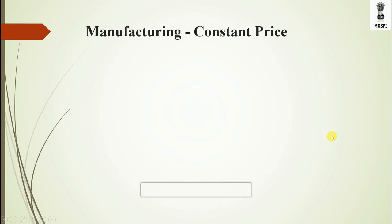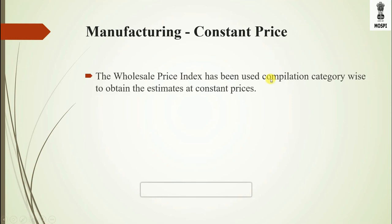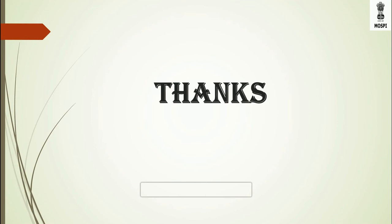All manufacturing GVAs are initially calculated at current prices. To estimate GVA of manufacturing at constant prices, the wholesale price index (WPI) is used compilation category-wise to deflate and obtain estimates at constant prices. Thank you.